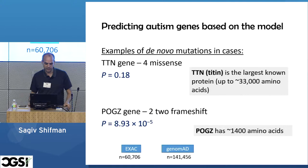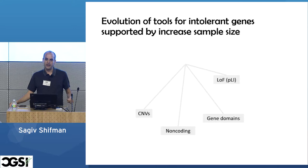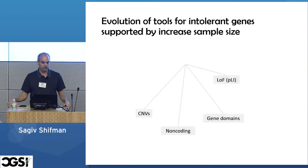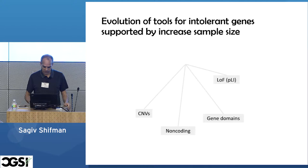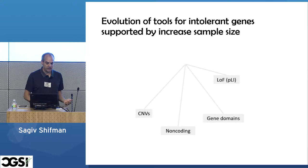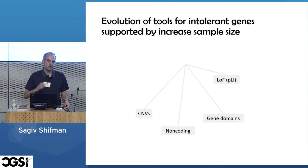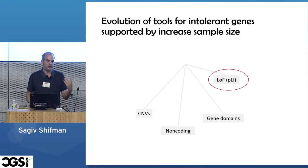When I say I'm shifting to evolution, I mean the evolution of the methods to study intolerant genes. People have extended these approaches in various ways: calculating intolerance to copy number variations, calculating intolerance to mutations in non-coding regions, doing higher-resolution measurements to identify gene domains intolerant to mutations, and generating metrics specifically for loss of function mutations.